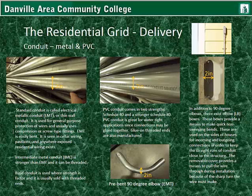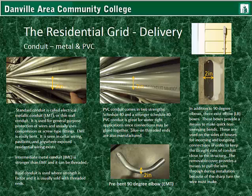Intermediate metal conduit, or IMC, is stronger than EMT and it can be threaded — basically it has a thicker wall. Rigid conduit is used for strength as a factor, and it's usually sold with threaded ends. Getting away from the metal conduit, there's also PVC conduit, and it comes in two strengths: Schedule 40 and the stronger Schedule 80. PVC conduit is great for watertight applications since connections may be glued together. It is also easier to assemble, and glue-on threaded ends are also manufactured for PVC.